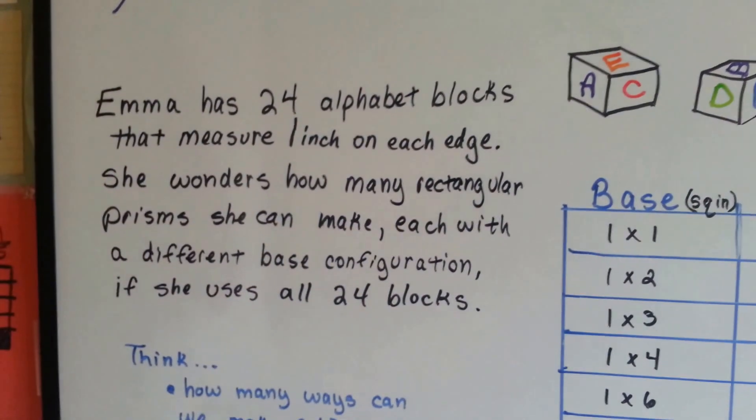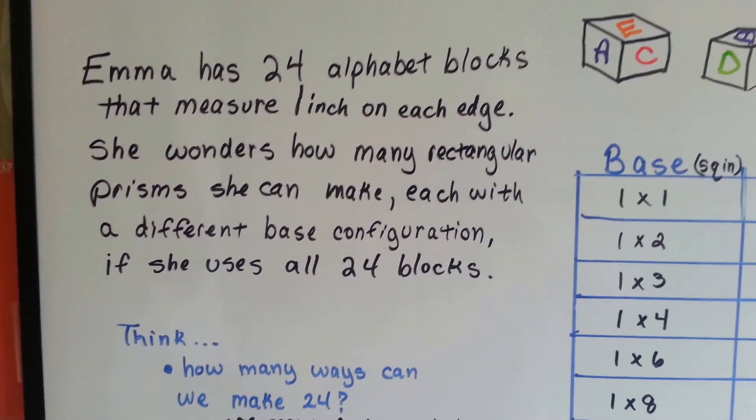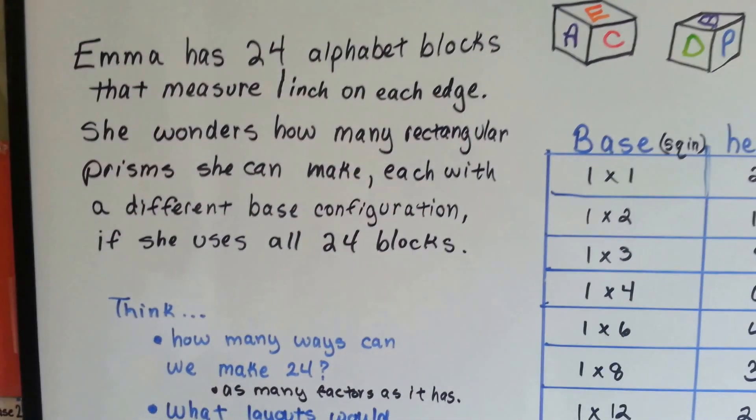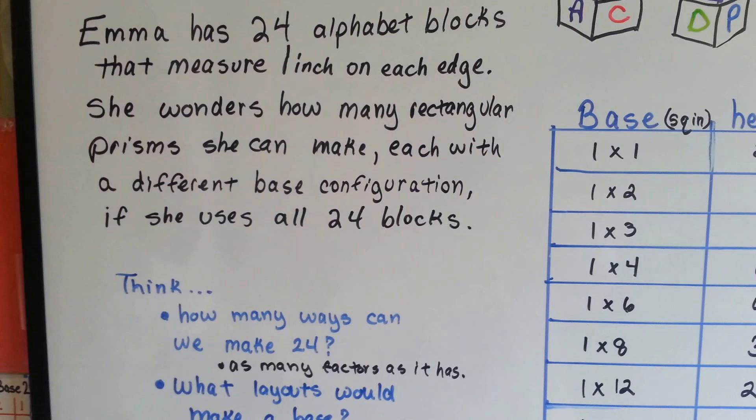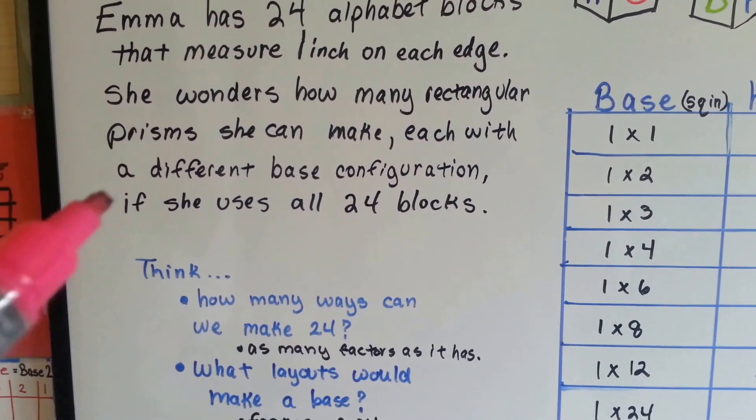The first one we have is Emma has 24 alphabet blocks that measure one inch each on their edges. It's one inch square. She wonders how many rectangular prisms she can make, each with a different base configuration, if she uses all 24 blocks.